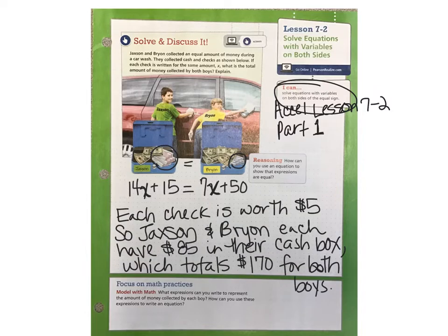Were you able to problem solve to discover that each check must be worth $5? If each check is worth $5, then that means Jackson and Brian each have $85 in their cash box, and that makes a total of $170 collected from the car wash for both boys.